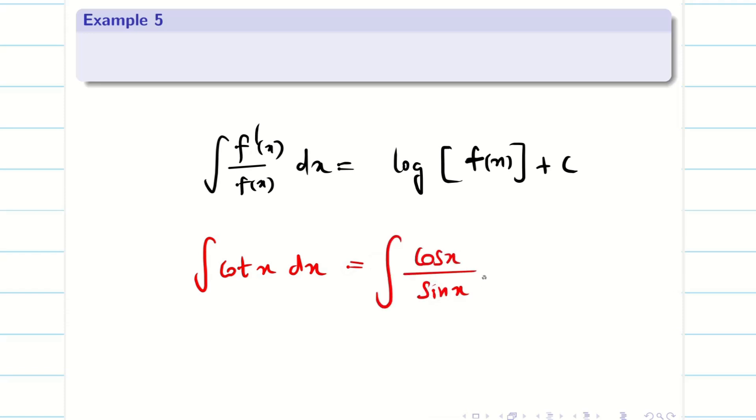Before going to the problem, let us recall some basic integration formulas which we used in our previous problems. We know that if the denominator is f(x) and numerator is f'(x) dx, then the answer is log f(x) + c. Therefore, if it is cot x, I can write it as integral cos x divided by sin x dx. Differentiation of sin x is cos x, so the solution is log sin x + c.